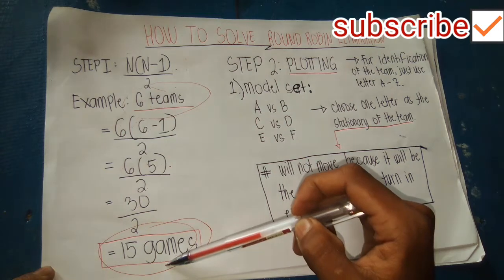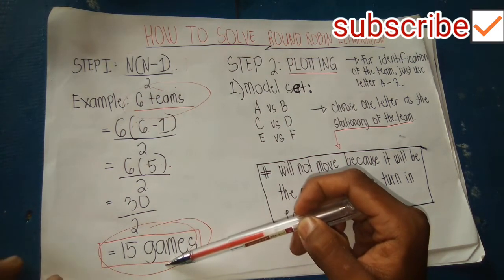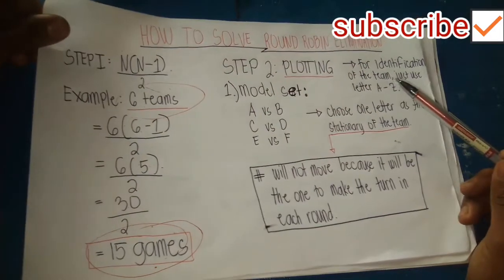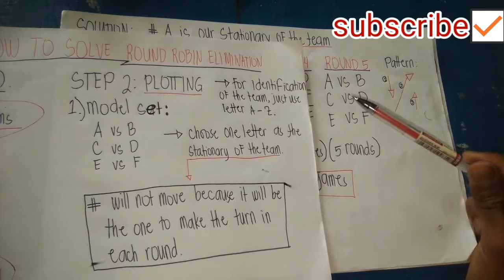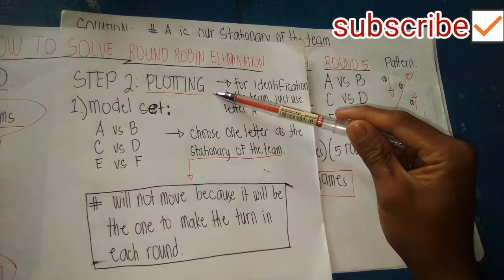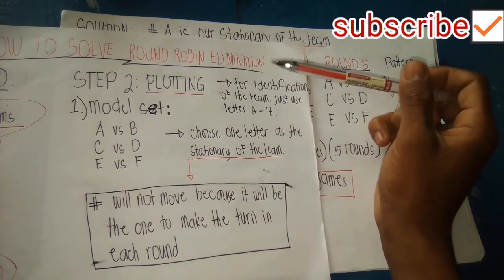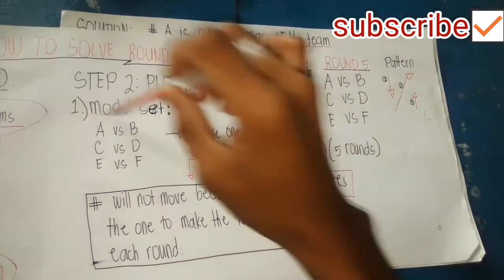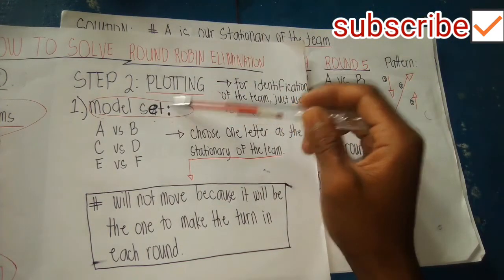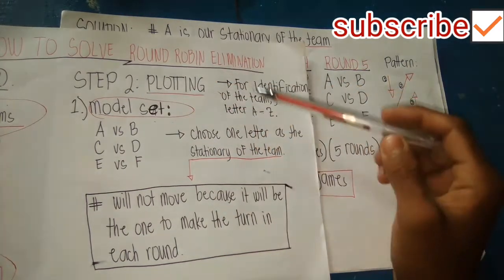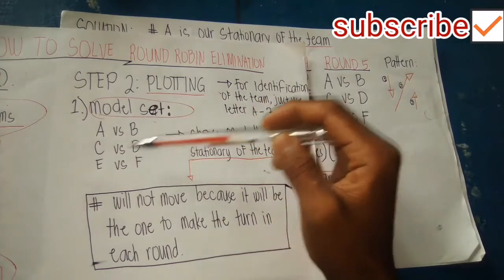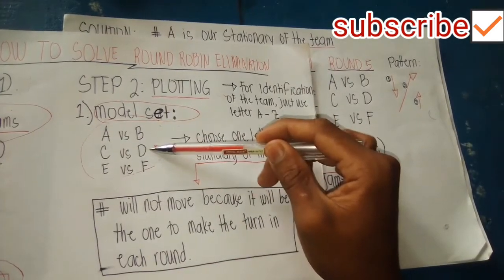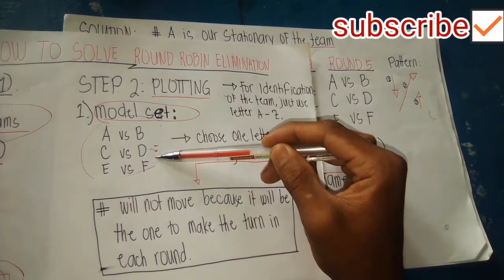We will verify that later. Step 2 is the plotting. In plotting, you use letters A to Z for identification of the teams. For our model set with six teams, we use A to F: A versus B, C versus D, and E versus F. This model set is not yet the final round or final match.